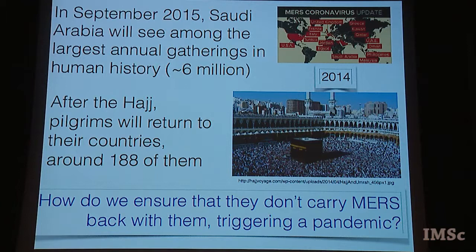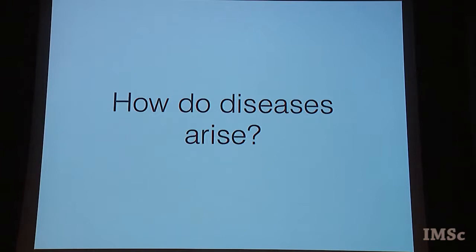A little more history: MERS originated in Saudi Arabia, which had the largest number of cases in 2014 and 2015. Why should this worry us in particular? In September 2015, as once a year every year for hundreds of years, Saudi Arabia will see among the largest annual gatherings of people in one place — about 6 million across a period of three weeks. After the Hajj, the pilgrims return to their own countries — about 188 of them. How do we ensure these people do not carry back this dreaded disease, creating an epidemic that spans the entire world?